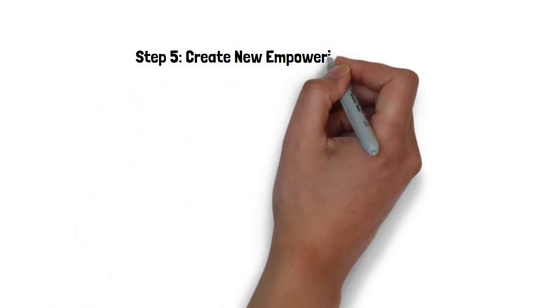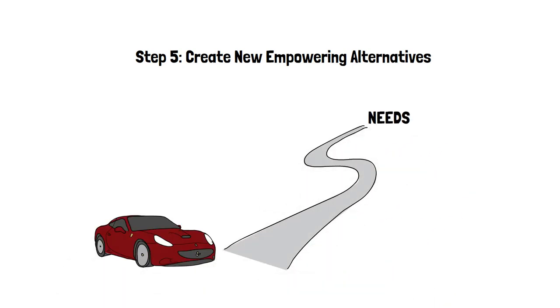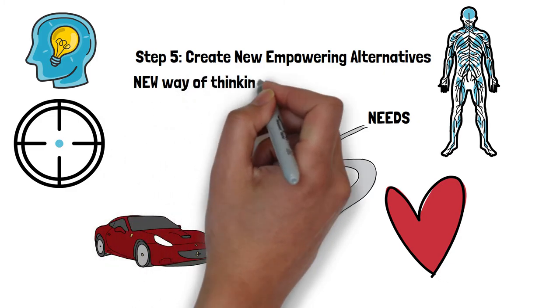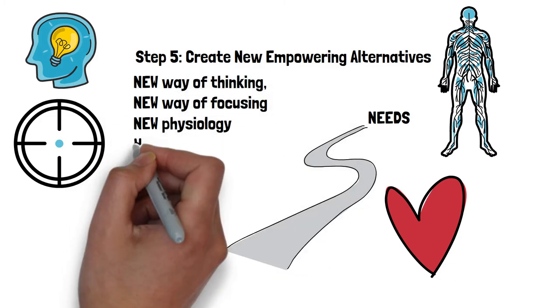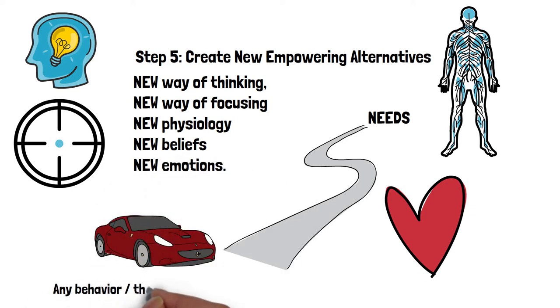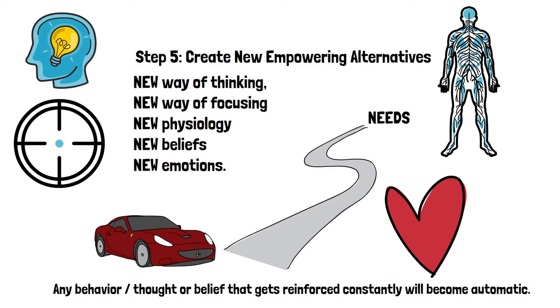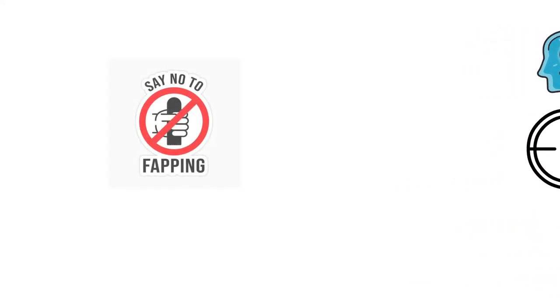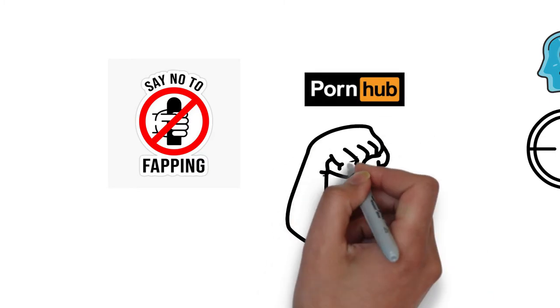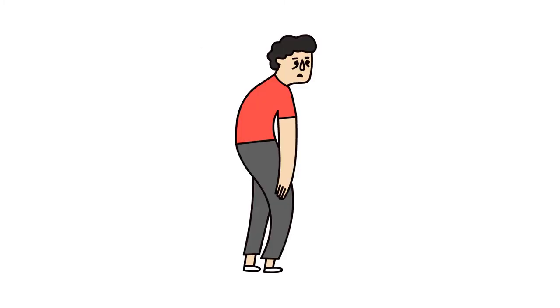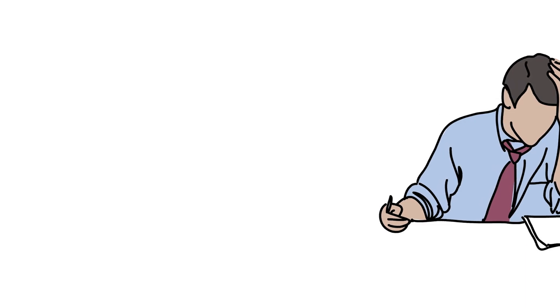Step 5, create new empowering alternatives. Tony Robbins says that the key is to find out what vehicles people use to meet their needs. Once you know, you must set a new empowering alternative. People need a new way of thinking, a focusing, a new physiology, new belief, new emotions. Any behavior, thought, or belief that gets reinforced constantly will become automatic. Be on the watch for someone's words. And to change associated pain with the current behavior and associate pleasure with a new behavior. So for example, I'm on NoFap day 20. Meaning I've given up porn, masturbation, orgasm for those who don't know what NoFap is. I might say instead of jerking off which made me lazy, anxious, and unproductive, I now use that extra time and energy to work on my side business and I'm getting closer and closer to financial freedom.